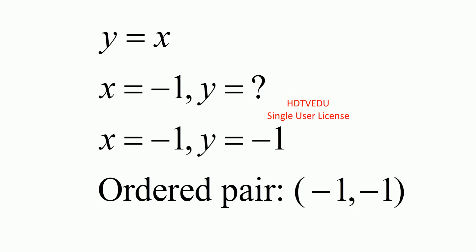What happens when we choose x equals negative 1? We are given the relationship that y is equal to x. We already know what x is — x is negative 1. So what is y? y is given by y is equal to x. So if x is negative 1, y is negative 1. So our ordered pair is negative 1, negative 1.